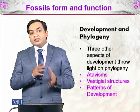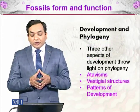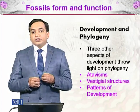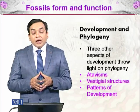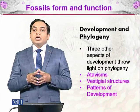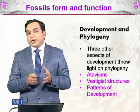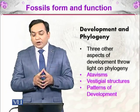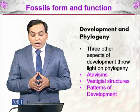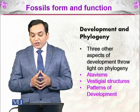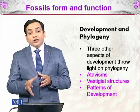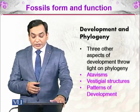The next topic is the relationship between development and phylogeny — specifically, what aspects of development shed light on phylogeny. There are three developmental aspects that provide evidence for phylogenetic relationships: atavism, vestigial structures, and patterns of development. We will discuss each of these one by one.